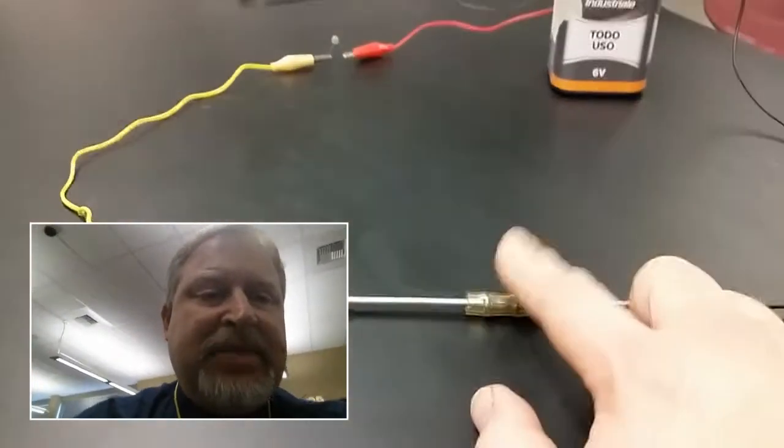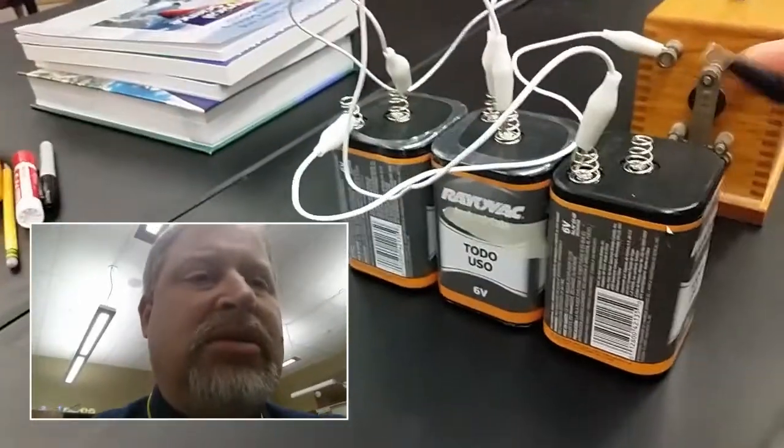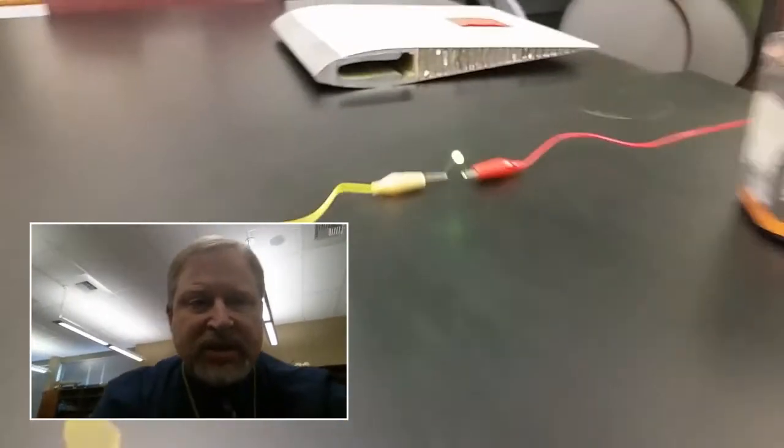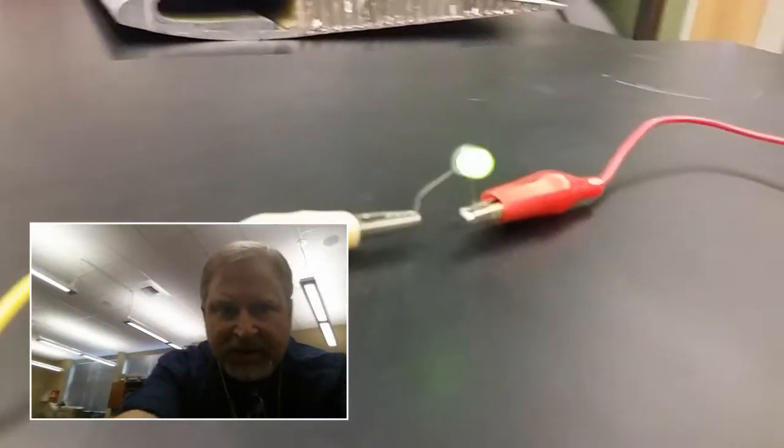But if you can imagine tapping on this fast enough with a sort of an electromechanical device you could go over here and in theory, not just in theory but in practice, be able to send Morse code over to the little light here and have a little light blink on and off without any wires touching it.